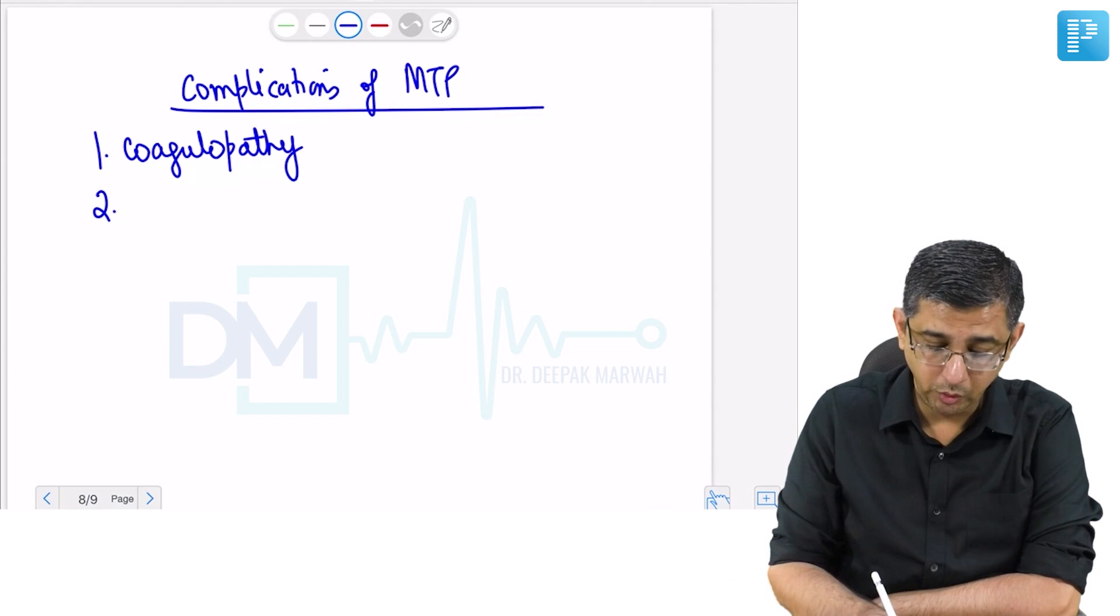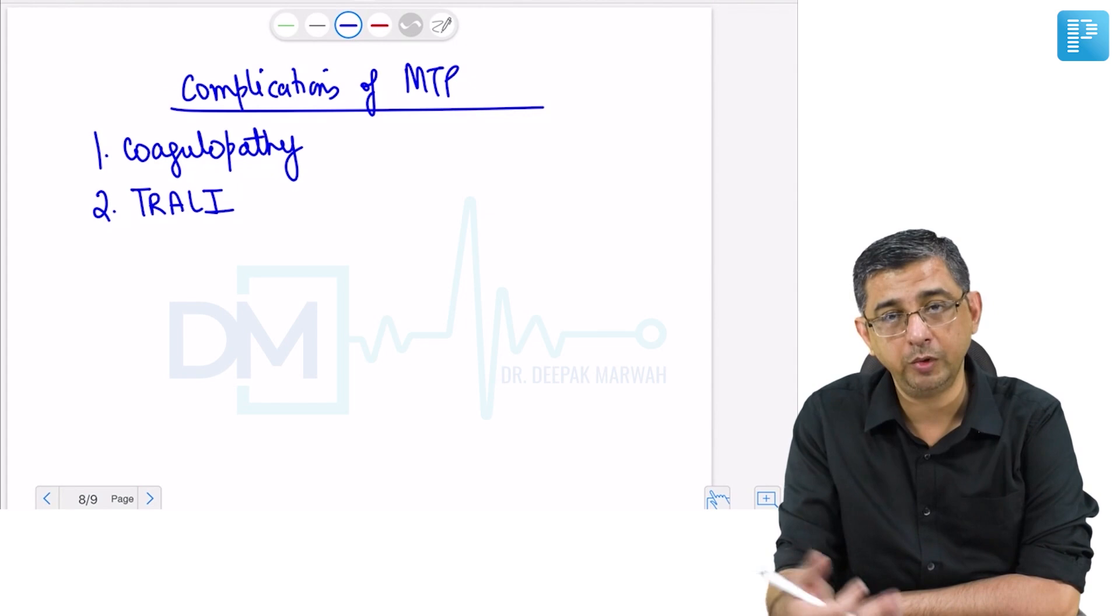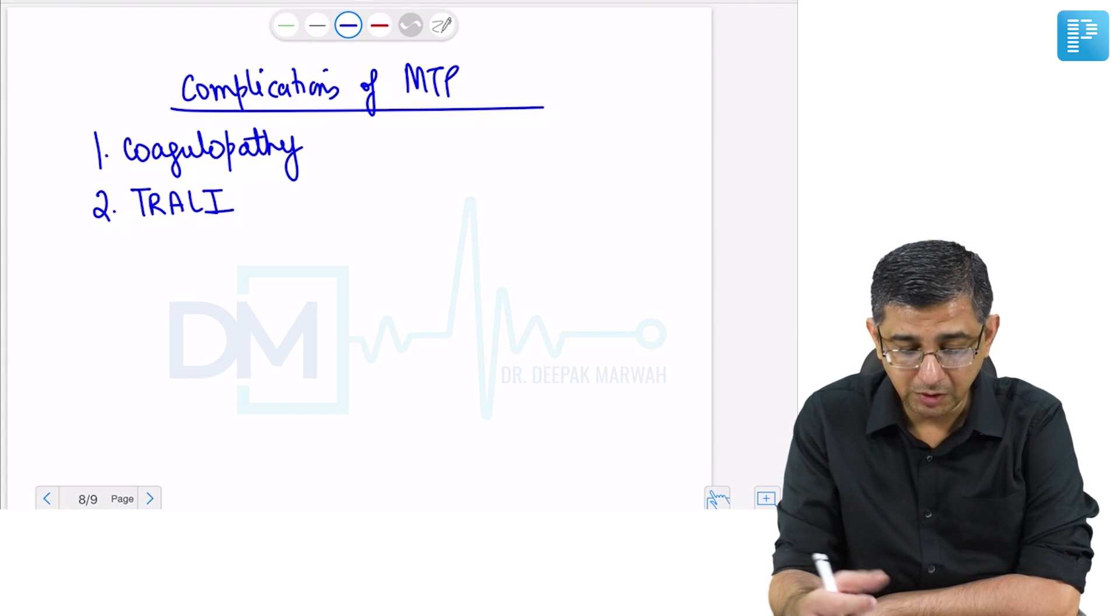In older books, coagulopathy is one of the biggest complications of MTP. But now the concept is that coagulopathy is the trigger for MTP. Coagulopathy contributes to massive transfusion protocol being initiated.